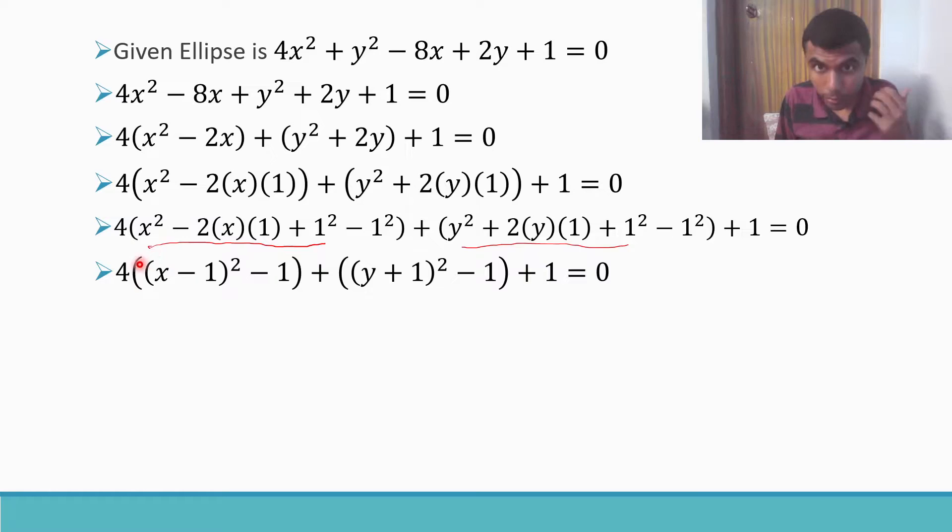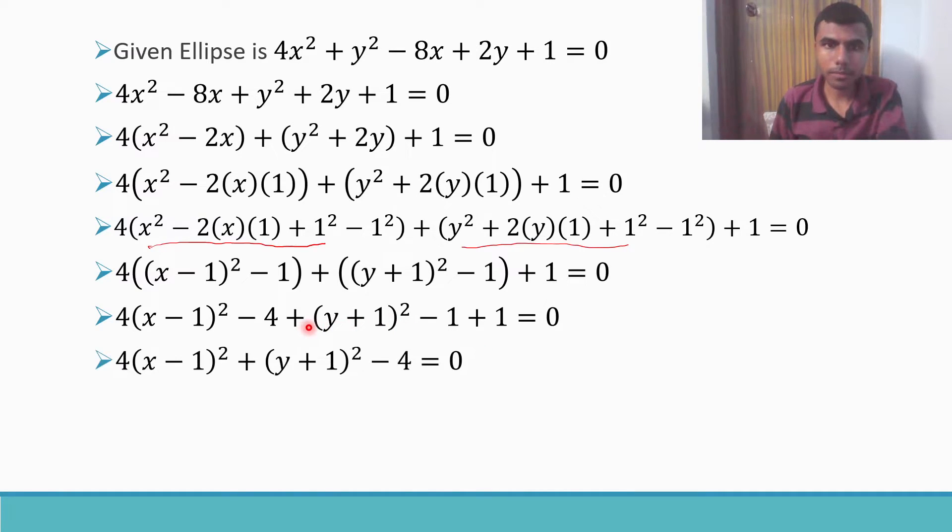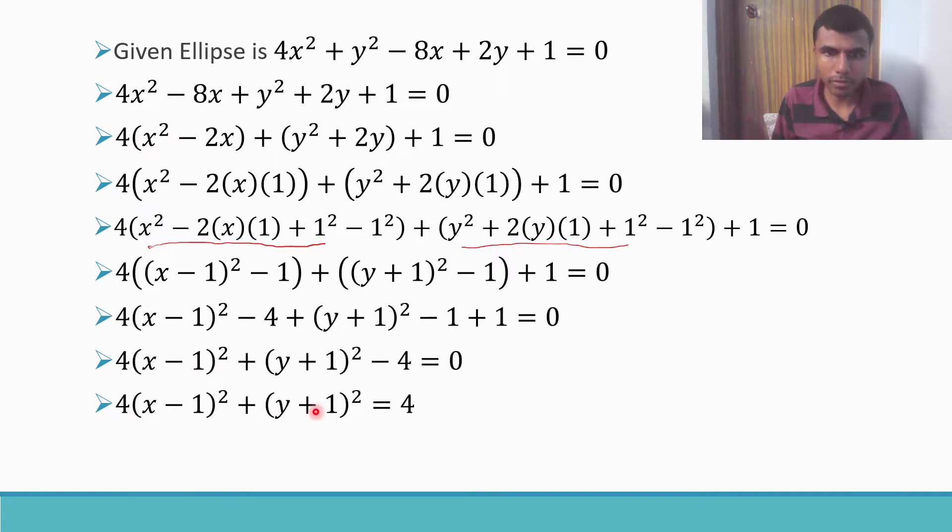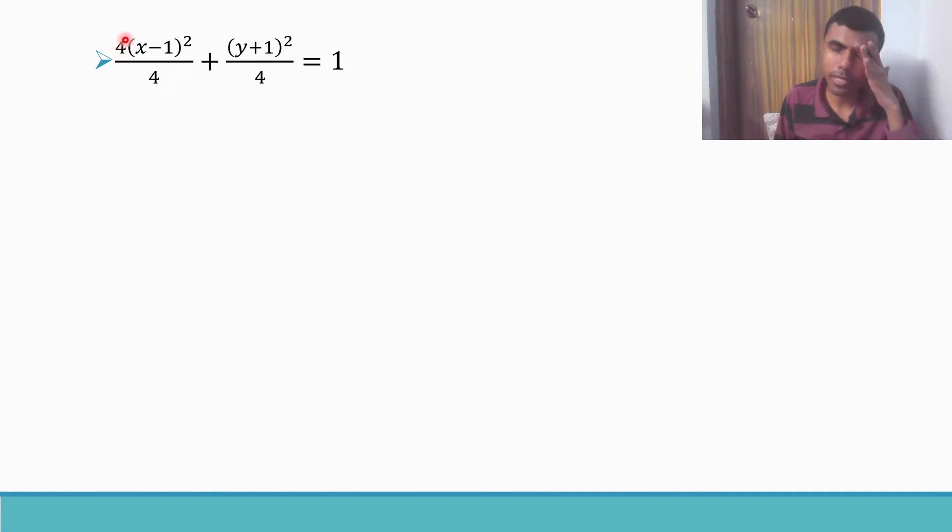Now multiply this 4, like 4 into this minus 4 into 1, so 4 ones are 4. 4 into (x-1)² is obvious, and (y+1)² - 1 is there, and this plus 1 is there since the beginning. It's a basic simplification, so -1 + 1 will get cancelled, and -4 I just wrote it to the end. Now send this -4 to the RHS. Now, if you see in the standard form of my ellipse, in the RHS I have 1. How to make this 4 a 1? I'm going to divide the entire equation by 4.